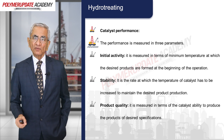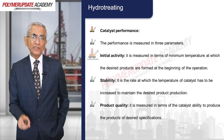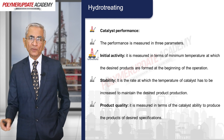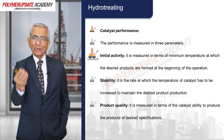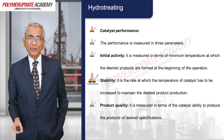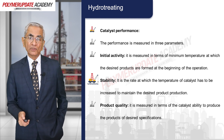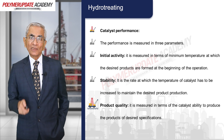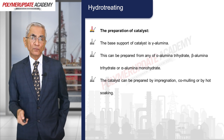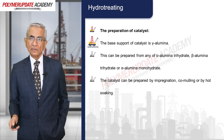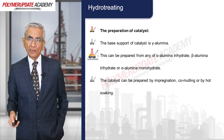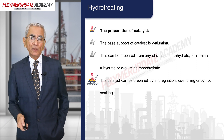Catalyst performance is measured in three ways: initial activity, measured as the minimum temperature at which the desired products are formed at the beginning of operation; stability, which is the rate at which the catalyst temperature must be increased to maintain desired production; and product quality, measured by the catalyst's ability to produce products of desired specifications. Regarding catalyst preparation, the best support is gamma alumina, which can be prepared from alpha alumina trihydrate, beta alumina trihydrate, or alpha alumina monohydrate. The catalyst can be prepared by impregnation, co-mulling, or hot soaking.